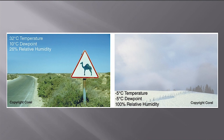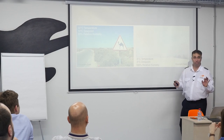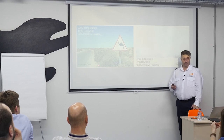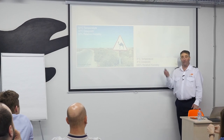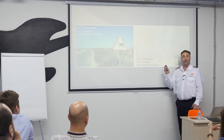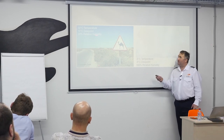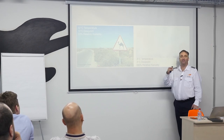32 degrees Celsius is the temperature, 10 degrees Celsius is the dew point — you have 26% relative humidity. How did they come up with that 26%? Honestly, I don't care — it doesn't matter. The only thing I'm concerned about as an aviator is it's not 100%. If it's not 100%, I am fine and happy. So that means I have some humidity, but I don't have saturated air.